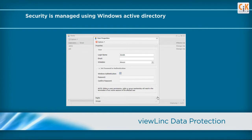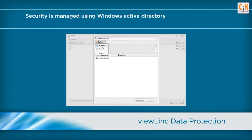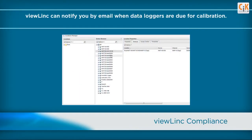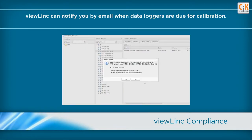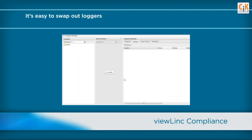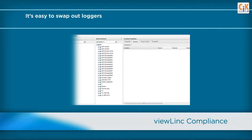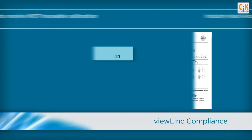ViewLink uses your normal login password and lets you assign the level of user permission. Having a hardware calibration plan is critical to compliance and ensuring correct data. ViewLink notifies you by email when data loggers are due for calibration and makes it easy to swap out loggers and continue monitoring.